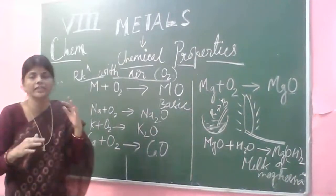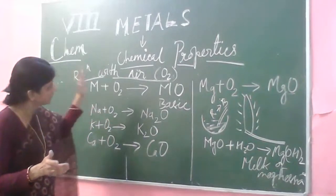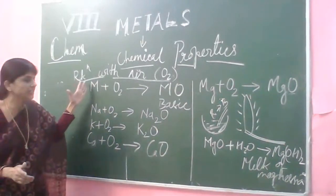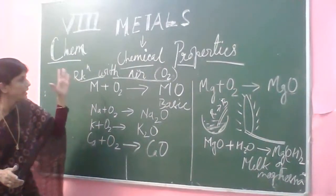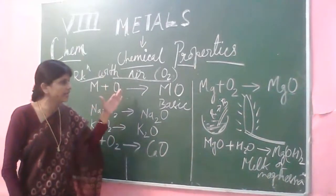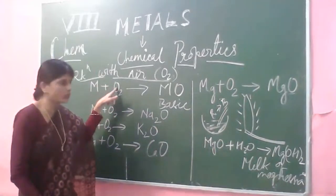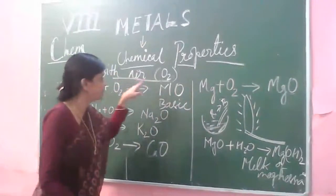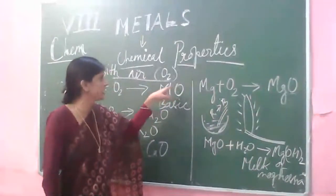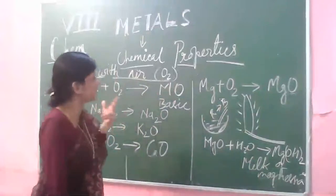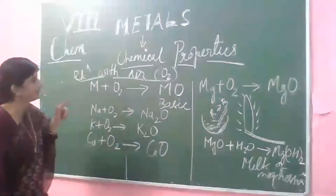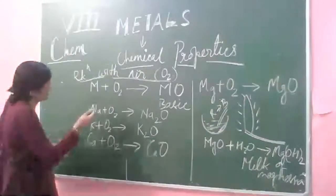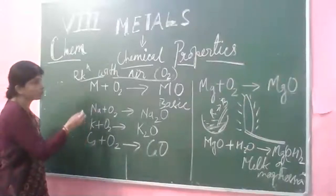Here we will study the chemical combination of metals with oxygen. I am representing the metal symbolically as M. When M combines with air, the reactive part of air is oxygen. That oxygen combines with the metal and produces the metallic oxide. Here they are in elemental form; here we get the compound — that compound is the oxide of the metal. It has been found through various experiments that the oxide of a metal is basic in nature.